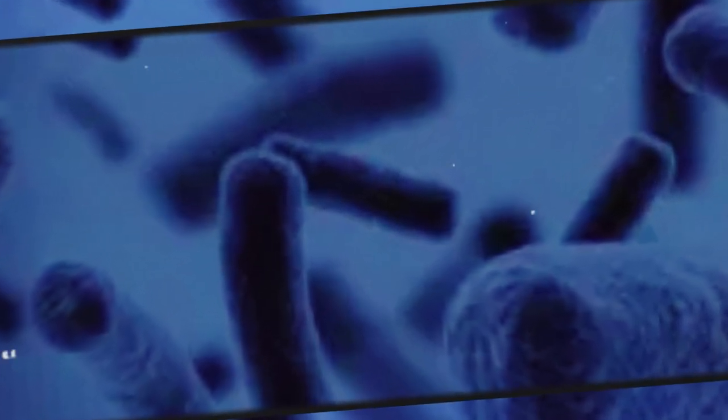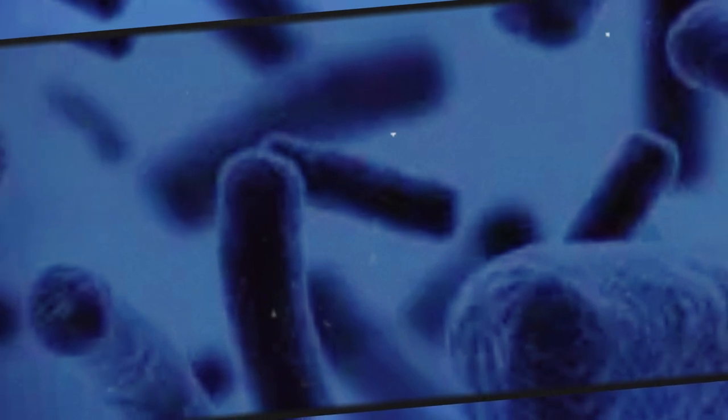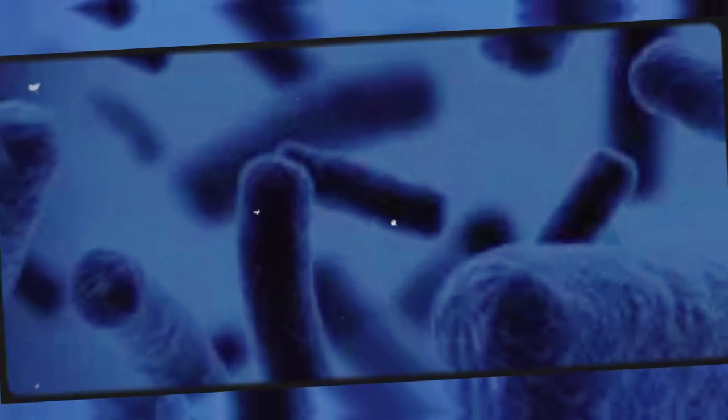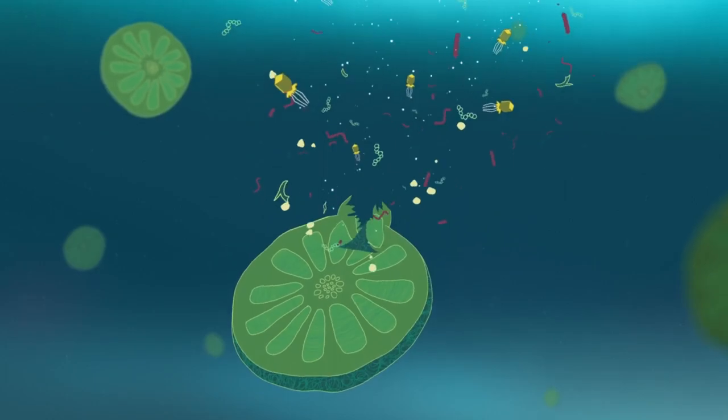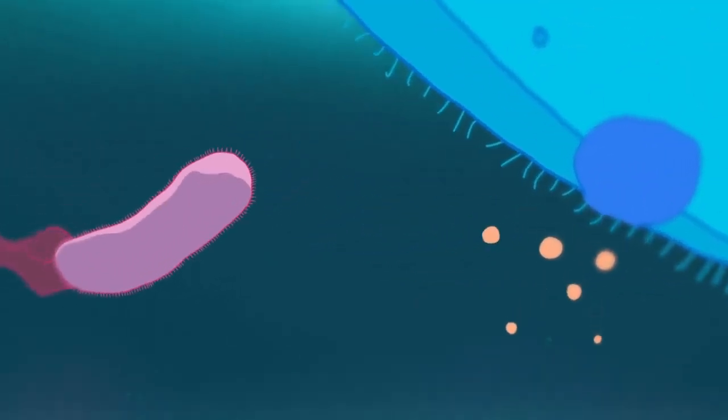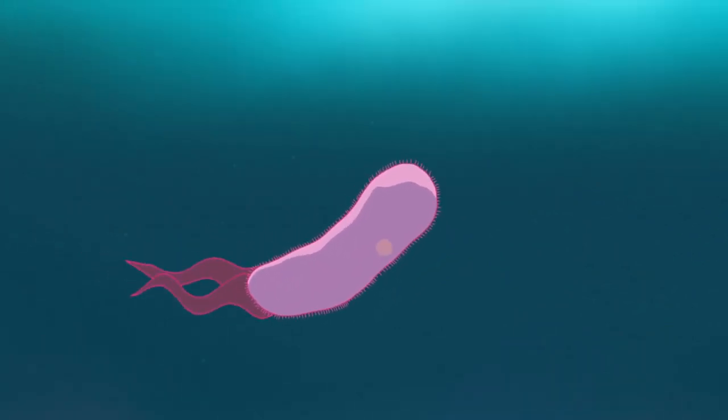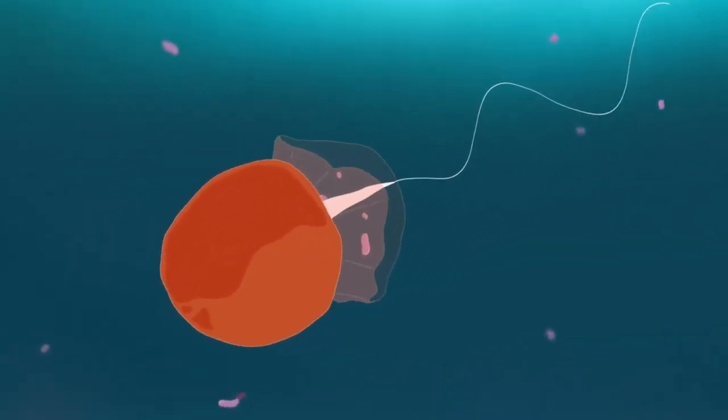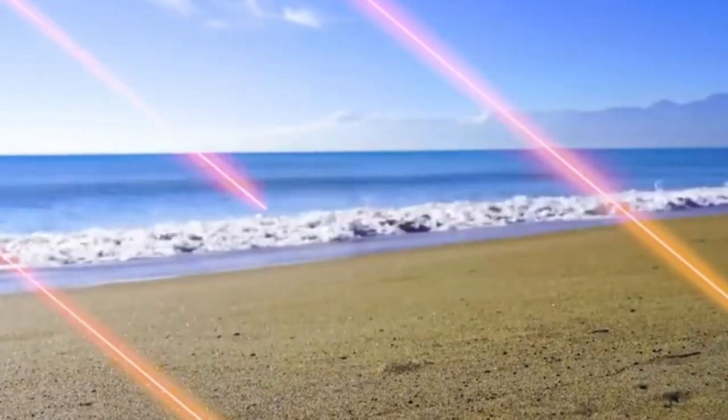These microscopic life forms, including bacteria, thrived in environments that would be inhospitable to most complex life today. Their metabolic activities, particularly photosynthesis, played a crucial role in shaping the planet's atmosphere by releasing oxygen as a byproduct. This oxygenation of Earth's atmosphere marked a transformative moment, paving the way for the evolution of more complex life forms.